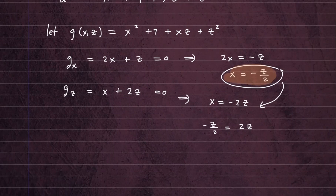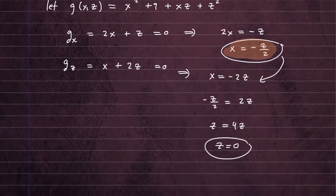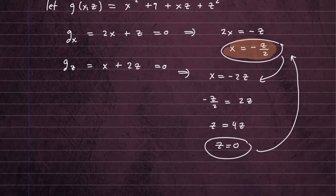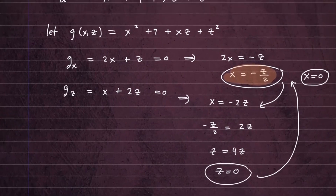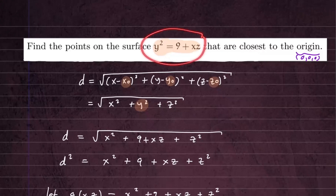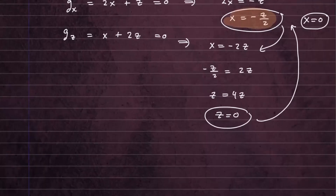Multiplying everything by 2, we get negative Z equals negative 4Z, which means Z equals 0. If Z equals 0, we can plug back in to get X — X will also be 0. So X equals 0 and Z equals 0. To find Y, we plug back into the surface equation: Y squared equals 9 plus X times Z. Since X and Z are both 0, Y squared equals 9, so Y equals plus or minus 3.